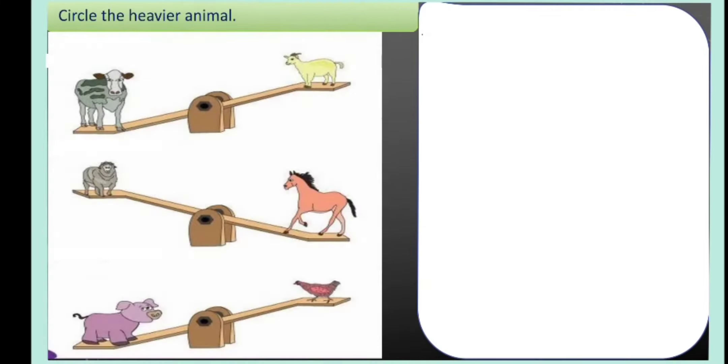Now we can try this together. Circle the heavier animal. The first one, we are having a cow and a goat on a see-saw. Now look at the cow. The cow is down. The goat is up. So it shows the cow is heavier. So we circle the cow.